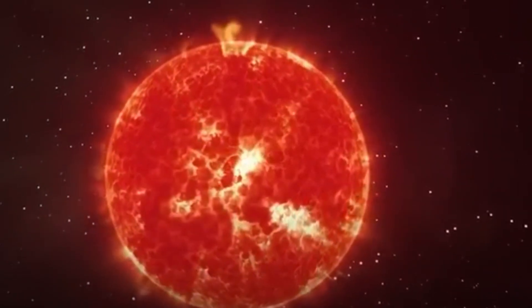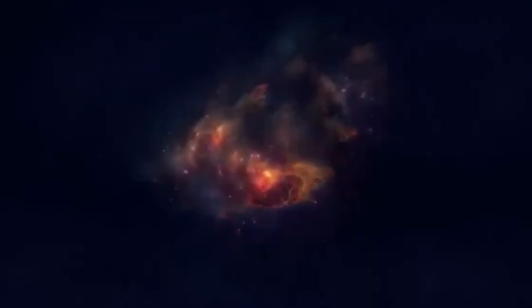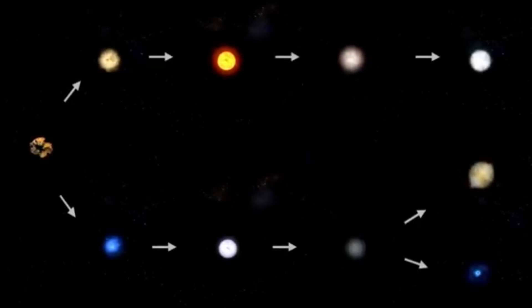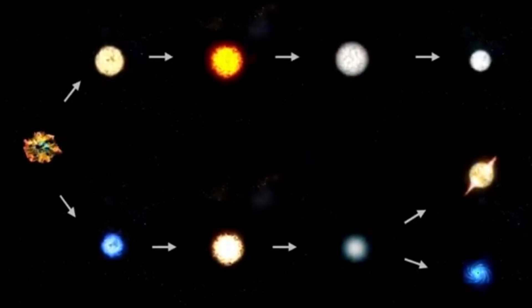Now, here's the part that's going to blow your mind. When Betelgeuse explodes, even though it's about 650 light years away from us, which means the light from that explosion would take 650 years to reach Earth, it's going to be so bright that it will completely change how our night sky looks.